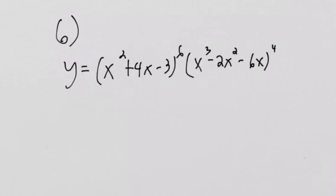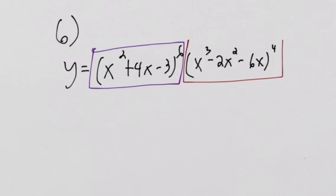So this one seems like it's going to be a nice, long, nasty product rule chain rule situation. We have two functions here - this one multiplied by this one. That's where our product rule is going to come into play, but we also have a chain rule with each of those.